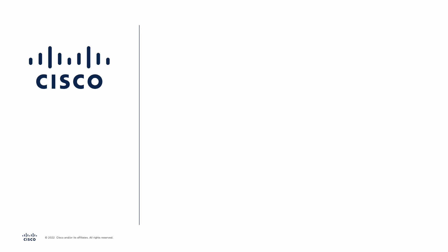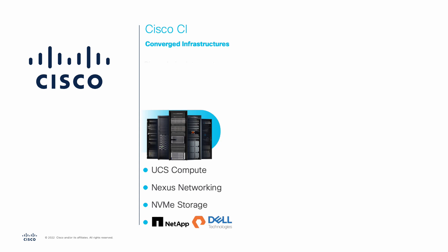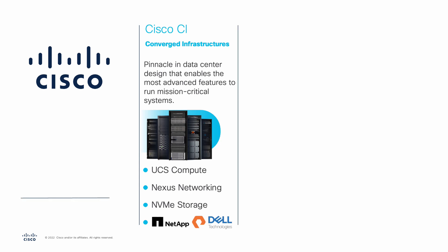Cisco provides fully integrated systems that are fully validated to run SAP enterprise solutions, including the SAP HANA in-memory database. Cisco converged infrastructures, also referred to as Cisco CI, are integrated solutions that combine the power of Cisco UCS compute, Nexus networking, and NVMe-capable storage from the top global storage vendors such as NetApp, Pure, and Dell. By fully integrating all the parts of the solution and providing a single management system through the globally available Cisco Intersight Software as a Service and on-premises management platform, the CI solutions represent the pinnacle in data center design that enables the most advanced features to run mission-critical systems such as SAP HANA.